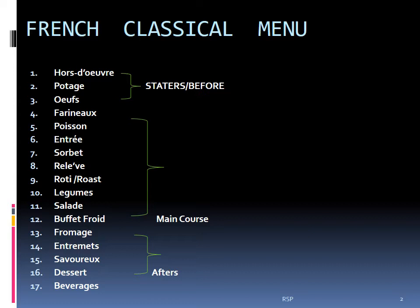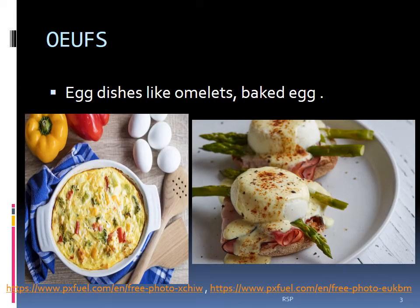Let's start today's session. The third course in the sequence is known as œufs, or the egg course. Egg dishes as a separate course have become less common in recent years. Omelettes have retained their popularity, while dishes such as œufs en cocotte occasionally feature on the menu. Examples include œufs sur le plat, œufs en cocotte, various types of omelettes, savory soufflés, and some baked egg preparations.